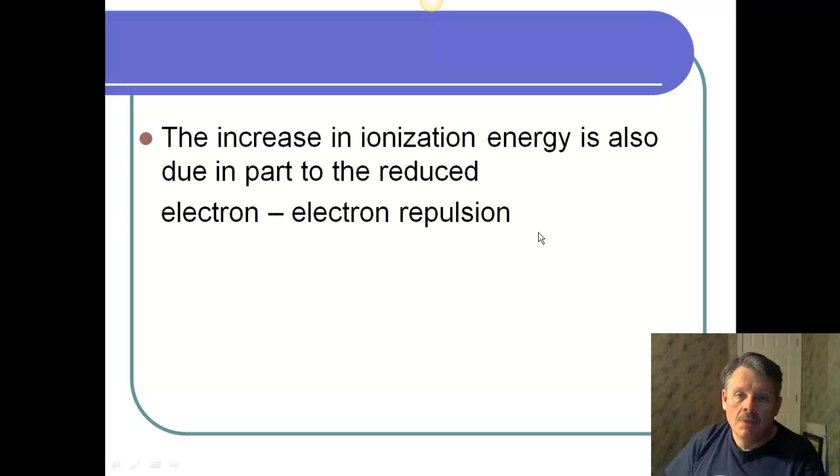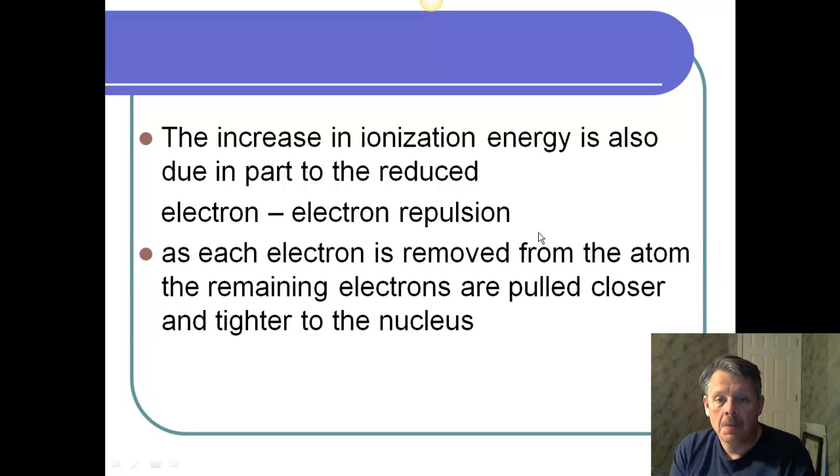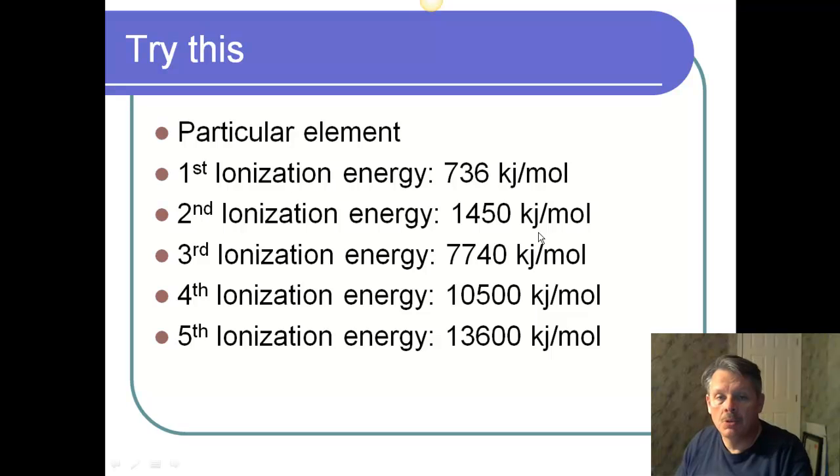Part of the increase in ionization is also due to the reduced electron-to-electron repulsion. Because the electrons are not repelling each other as much. As each electron is removed from the atom, the remaining electrons are pulled closer and tighter into the nucleus. So, they're held on tighter. They're held on more by the protons that are in the middle.